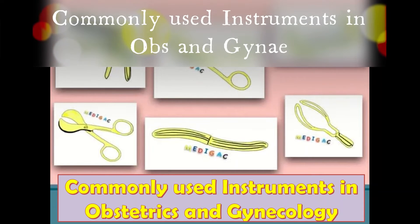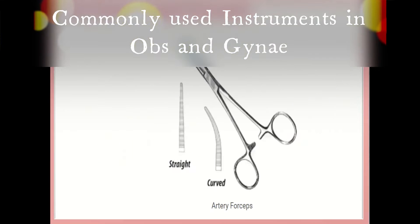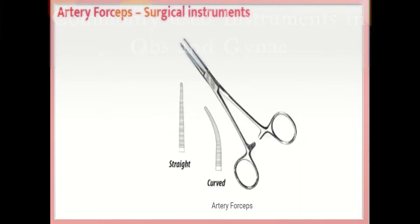Today we will discuss the commonly used instruments in obstetrics and gynecology. First comes the artery forcep, which is used as a hemostat. It is used during hemorrhage for clamping bleeding vessels, and also to grab and maneuver delicate tissues.